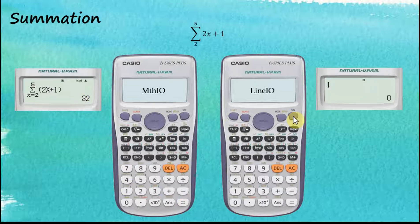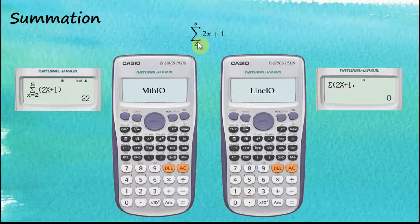For Linear Input with summation, we tell the calculator we want to perform summation, then enter the function: two alpha x plus one. Then shift comma, and the two arguments — the lower limit two, shift comma, upper limit five — then close the bracket and press equal to get the answer.